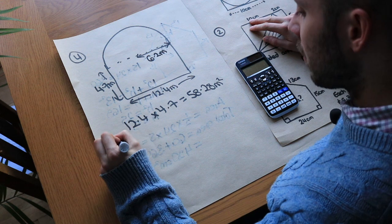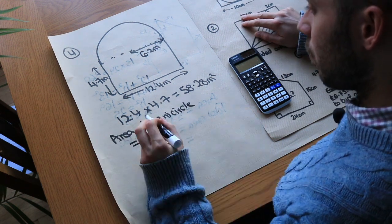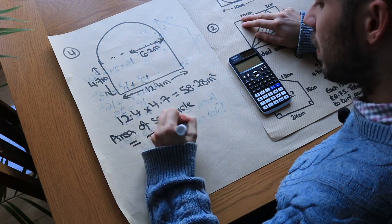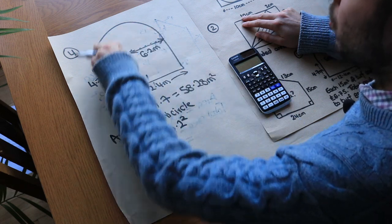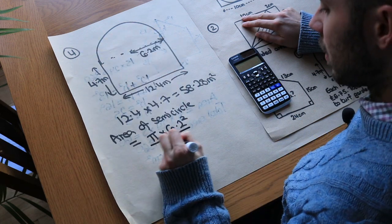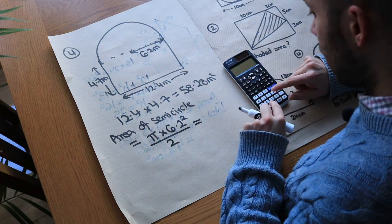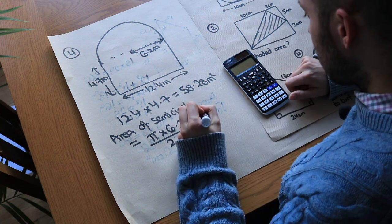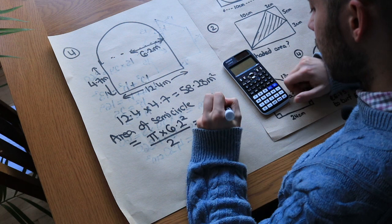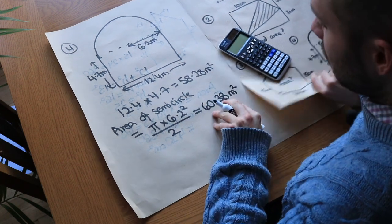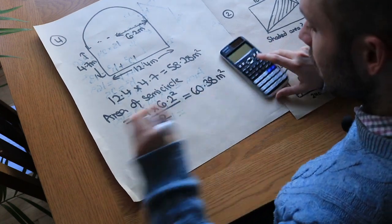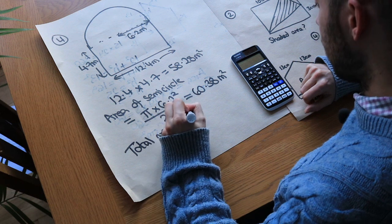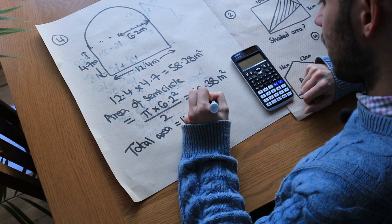The area of the semicircle equals pi r squared — that's the area of the full circle — divided by 2 since we only want half. So pi times 6.2 squared divided by 2 gives us 60.38 metres squared. Don't round this value too much because we still have more calculations to do. Adding those together, the total area is 118.66 metres squared.